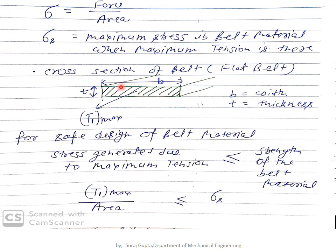Consider the cross-section of the flat belt, where thickness is t and width is b. The area of this section is b multiplied by t. The maximum tension T1_max is applied outward and is responsible for failure of the belt material. For safe design, the stress generated due to maximum tension must be less than or equal to the strength of the material.